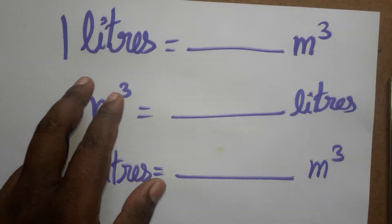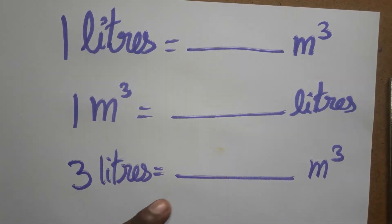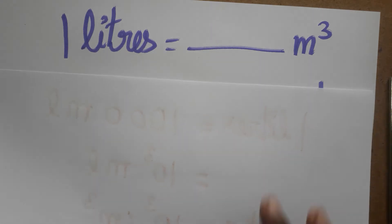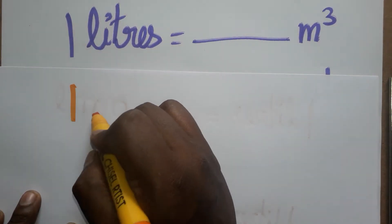Today we are going to learn how to convert from liter to meter cube and meter cube to liter. One example: three liters is equal to dash meter cube. First we will learn one liter is equal to dash meter cube.